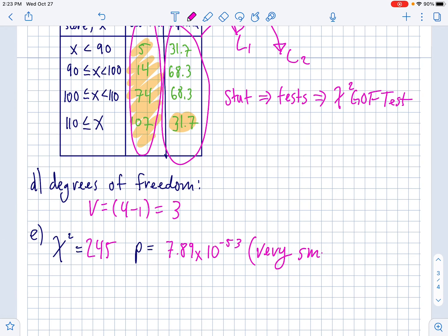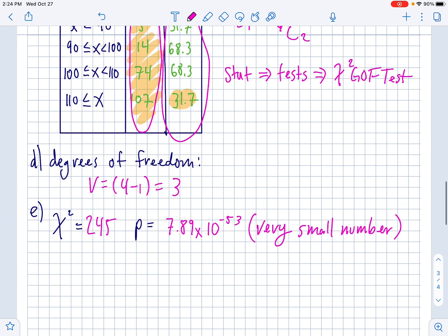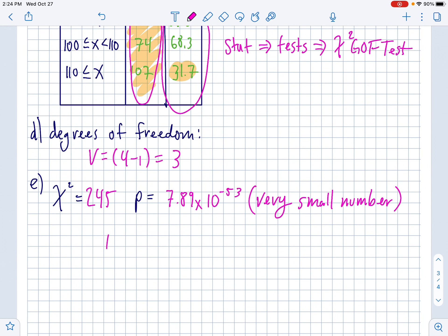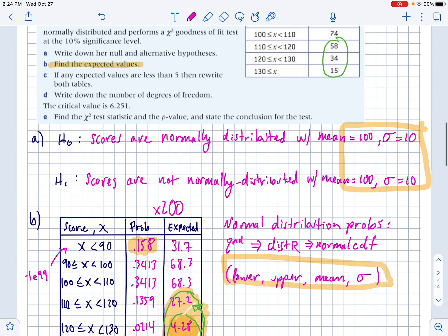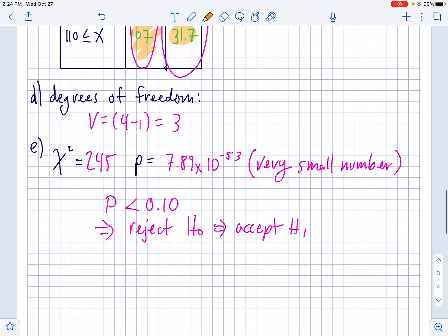And the P value is 7.89 times 10 to the negative 53rd. This is a very small number. So what this means, if we're testing it at 10%, it really doesn't even matter. Let's just use the P value to say that the P is less than 0.10, which means if the P is low, you reject the ho. So we reject ho, accept h1.